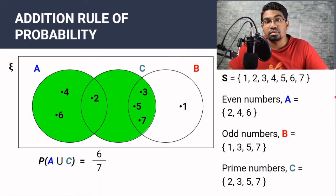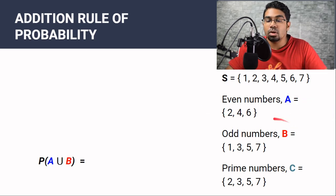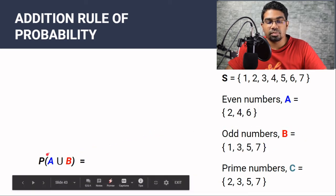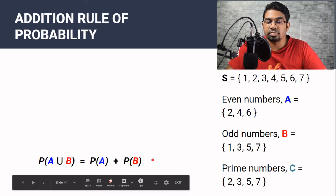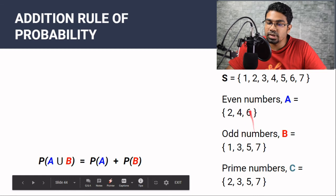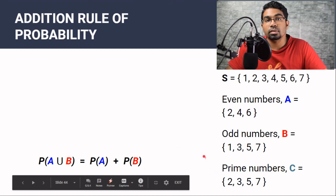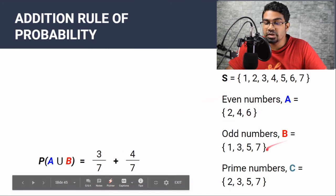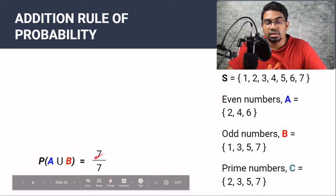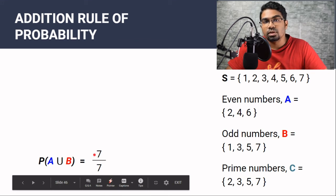What about mutually exclusive events? Let's say we wanted to find the probability of randomly drawing a number that is an even number or an odd number. So we will be finding the probability of A union B. Using the addition rule, this is the probability of A plus the probability of B. Now we check for intersect — there are no common outcomes between A and B, so A intersect B is an empty set and we don't have to worry about subtracting the intersect. Probability of A is 3 out of 7, and probability of B is 4 out of 7, so the probability of A union B is 3 out of 7 plus 4 out of 7.